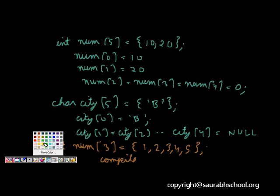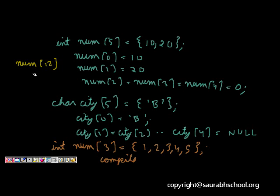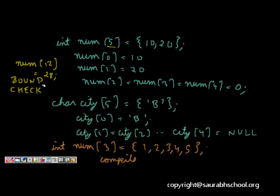However, if you have defined int num[5] and try to access num[12], this is perfectly legal in C — it will allow the access. But it will cause a runtime error. There is no bounds check in C. You can even assign num[12]=28, which is legal code, but at runtime it may overwrite memory allocated for a different variable and cause serious problems.